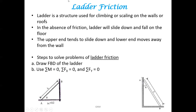Here, two ladders are shown. For the first picture, a ladder of length L is placed against a wall and a floor such that it makes angle theta with respect to horizontal. If end A of the ladder is resting against the floor, there will be a contact reaction at point A directed from the floor towards the ladder. As this is end A of the ladder, we can name this reaction as NA.